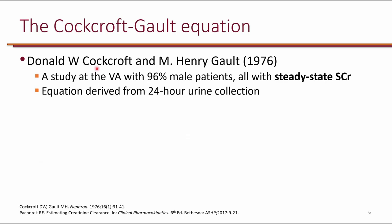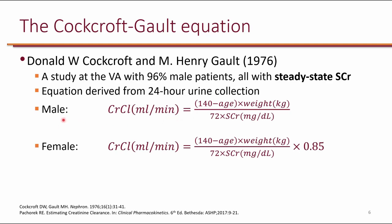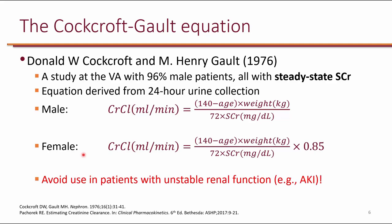Here's how the Cockcroft-Gault equation was developed. In the 1970s, two colleagues, Cockcroft and Gault, did a study at the VA which included 96% male patients. They did 24-hour urine collections, and from their data, derived an equation. Because most of their patients were male, they included a correction factor for females. Avoid use of this equation in patients with unstable renal function, such as AKI, because everyone in the derivation study had stable renal function.